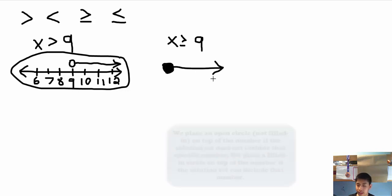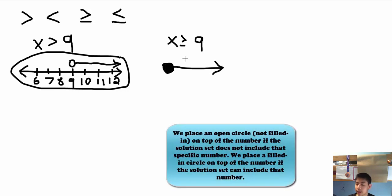Now the only difference is x is greater than 9, the solution set does not include 9, but x is greater than or equal to 9 the solution set does include 9. So we fill in the circle for x is greater than or equal to 9 but we leave the circle empty for x is greater than 9.